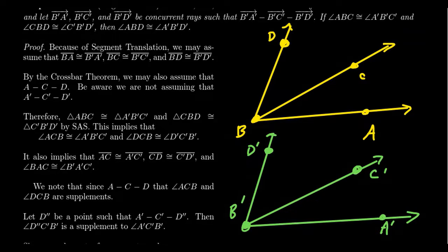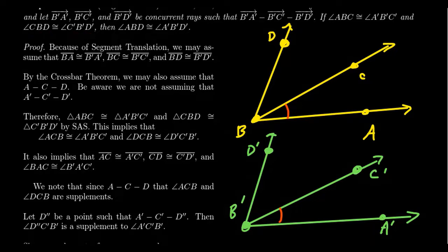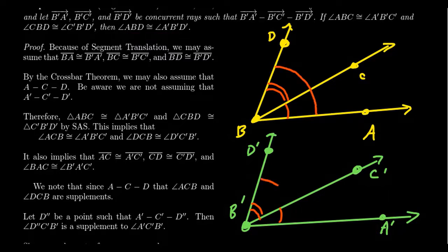Now for the addition part. Suppose that angle ABC is congruent to angle A'B'C', and suppose that angle CBD is congruent to angle C'B'D'. These are the assumptions for angle addition. The conclusion is that angle ABD is congruent to angle A'B'D'. This is the analogous statement to segment addition, but now for angles.